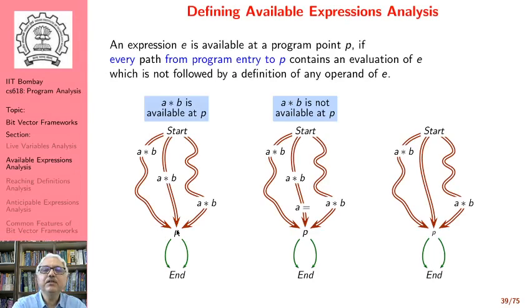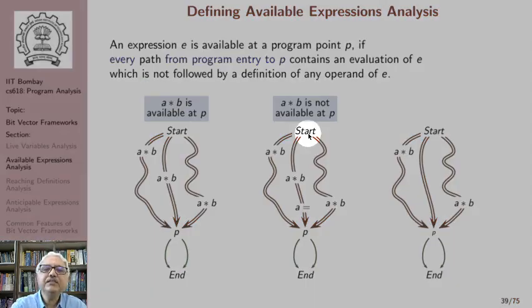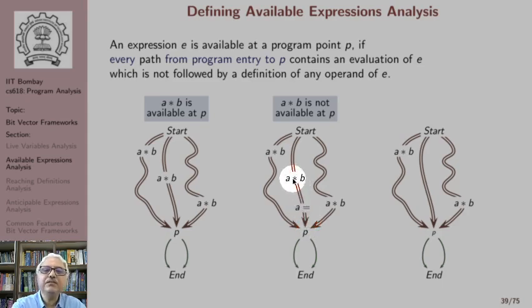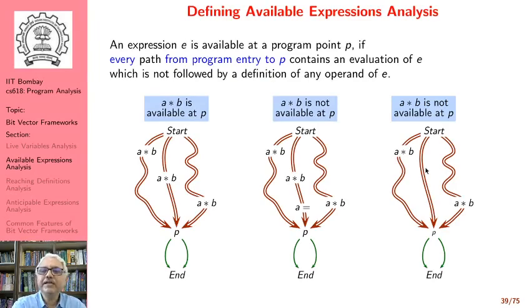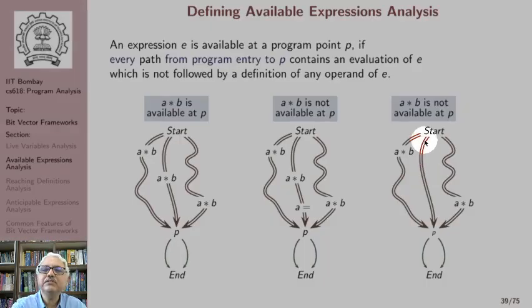In the second example, the expression a*b is not available at p. Although a*b is available along one path and is also computed in another path without a following definition of operands, in a third path the expression is computed and is followed by an assignment to a. Therefore we cannot guarantee that computing a*b at p would yield the same value. Similarly, in the third example, the expression is not available because there is a path along which it has not been computed at all.